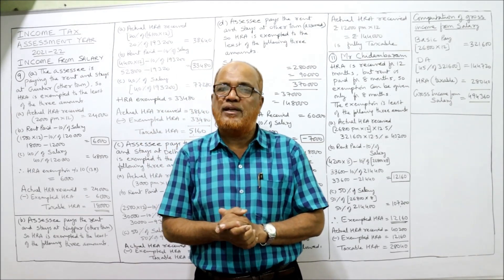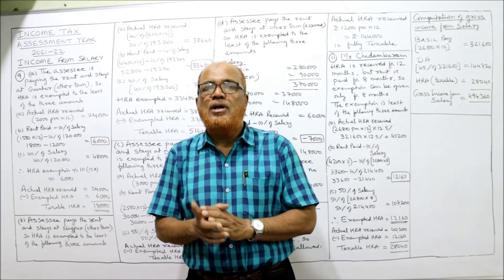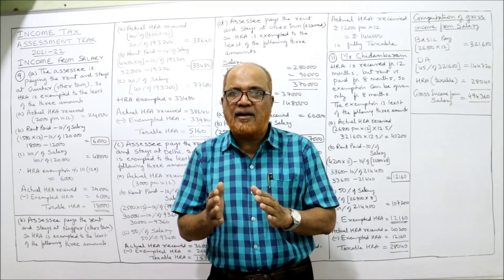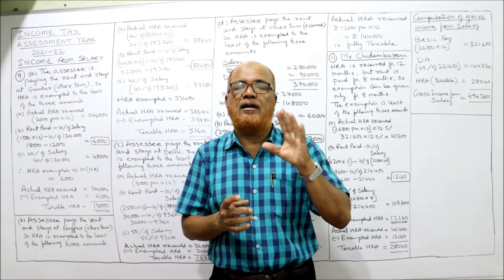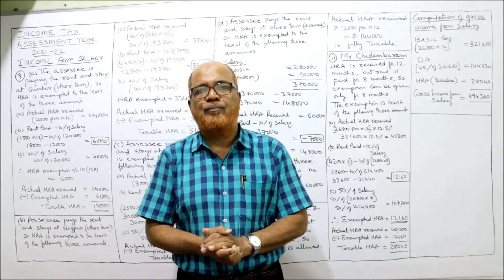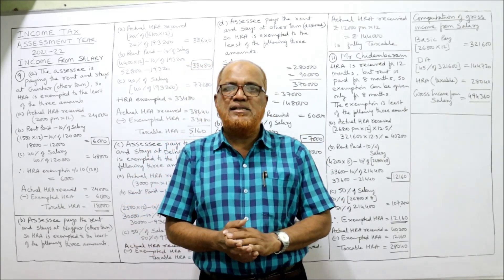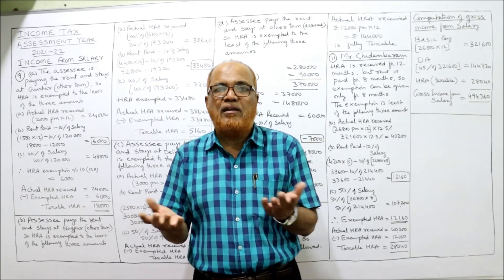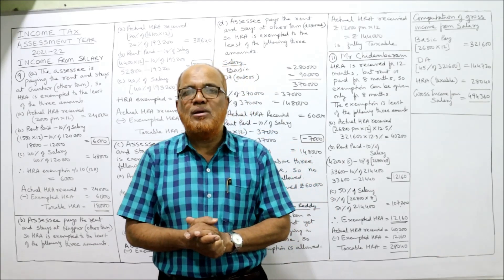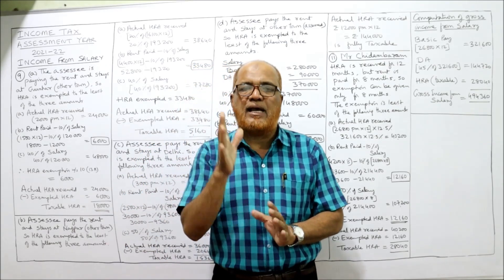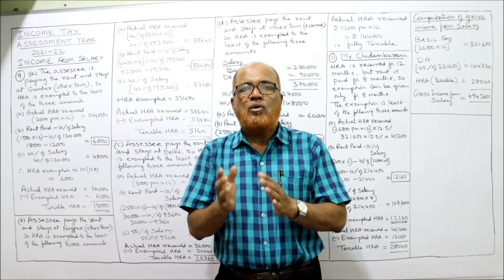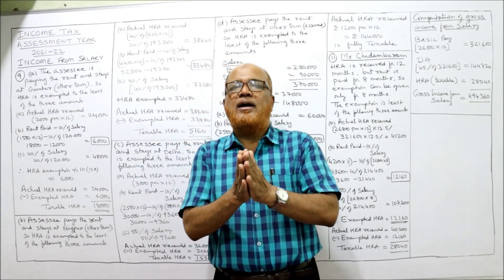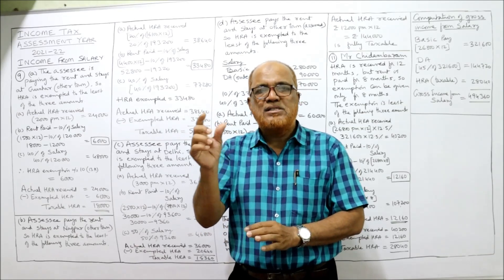When an employer gives HRA to the employee, the employee may get exemption under section 10(13A) on satisfying some conditions. The first condition: if the employee stays in a rented house and is paying rent, then only HRA exemption will be given. If the employee is staying in his own house or a relative's house where he is not paying any rent, no HRA exemption will be given — whatever HRA received is fully taxable.